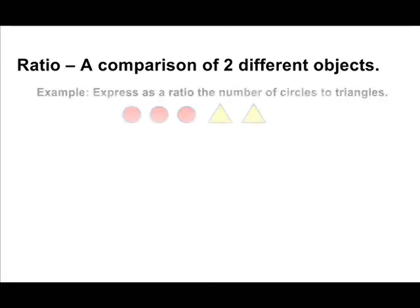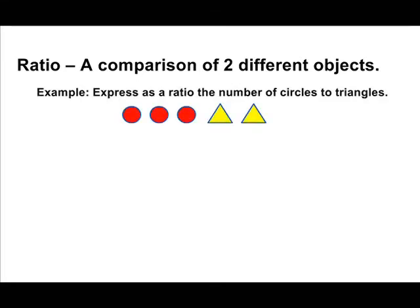With this example, we are going to write a ratio of the number of circles as compared to the number of triangles. When writing a ratio, look at the object that's given first within the problem. The unit given first is circles and we have to compare them to triangles, so we must write out the number of circles first and the last number will be the number of triangles.